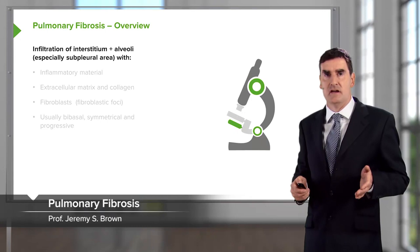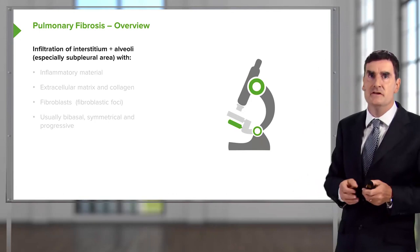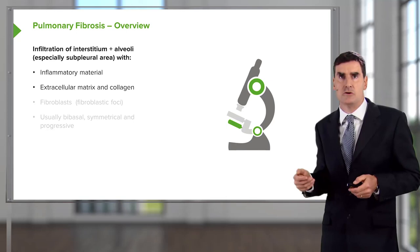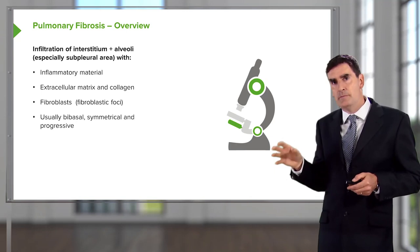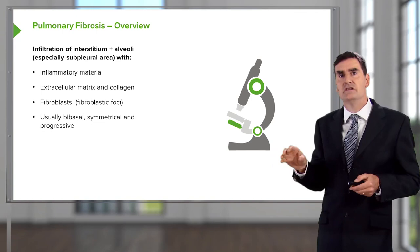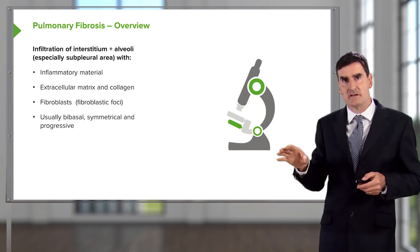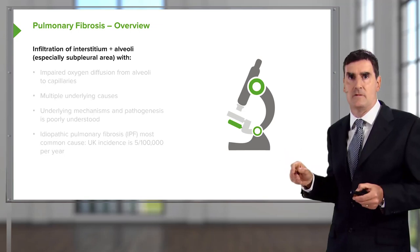Pulmonary fibrosis is the commonest cause of interstitial lung disease and the most important clinically. It's due to infiltration of the interstitial alveoli with inflammatory material and increased extracellular matrix, collagen, and fibroblasts. This is normally in a bibasal distribution, usually subpleural, usually relatively symmetrical, and importantly, pulmonary fibrosis of the idiopathic type is generally a progressive disease.